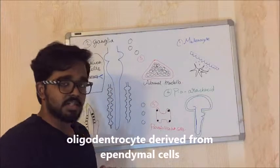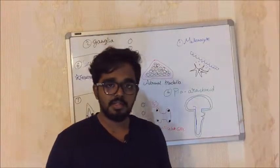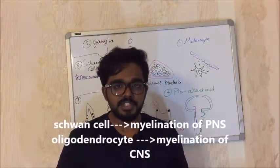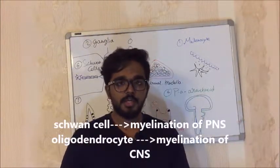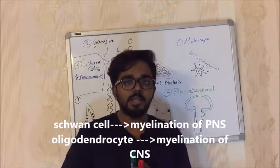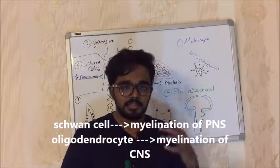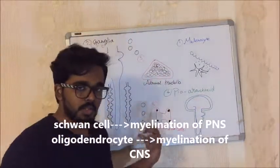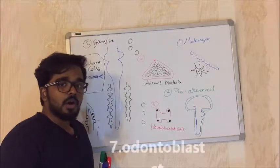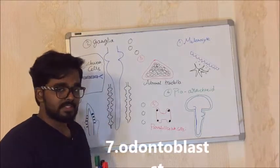Next are Schwann cells. In the peripheral nervous system, Schwann cells provide myelination. These Schwann cells are derived from Neural Crest Cells.